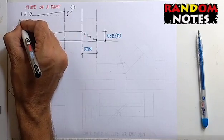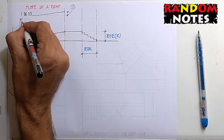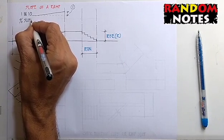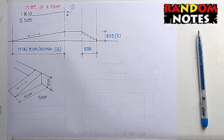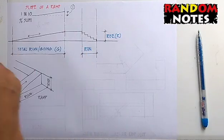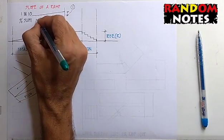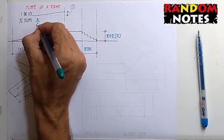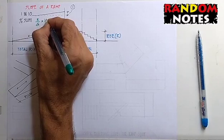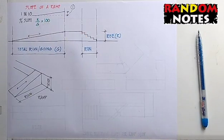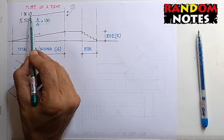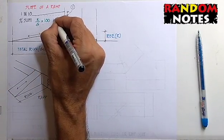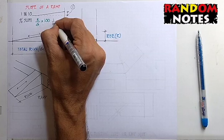We also denote slope as percentage. This can be calculated as R upon G or rise upon going into 100. In this case, it is 1 upon 10 into 100.